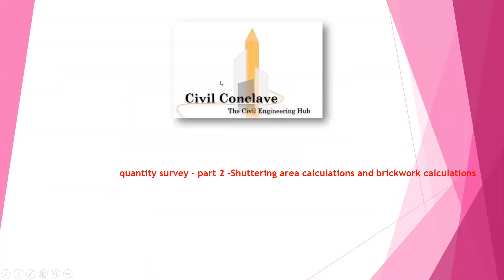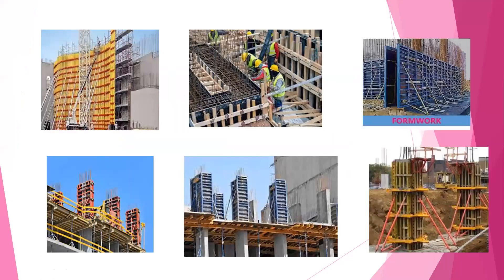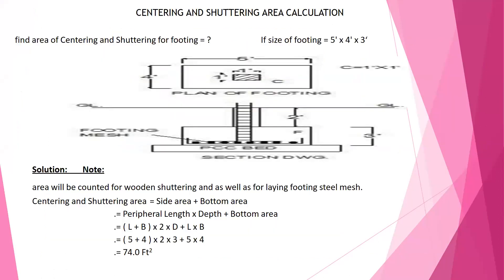Dear friends, welcome to Civil Conclave presentation. In quantity survey part two, we are going to discuss about shuttering calculations and brickwork calculation. These are some images of how formwork is carried out in various sites. Now, for a size of 5 feet by 4 feet by 3 feet, how to do a shuttering area calculation — this is what we are going to discuss about in this slide.